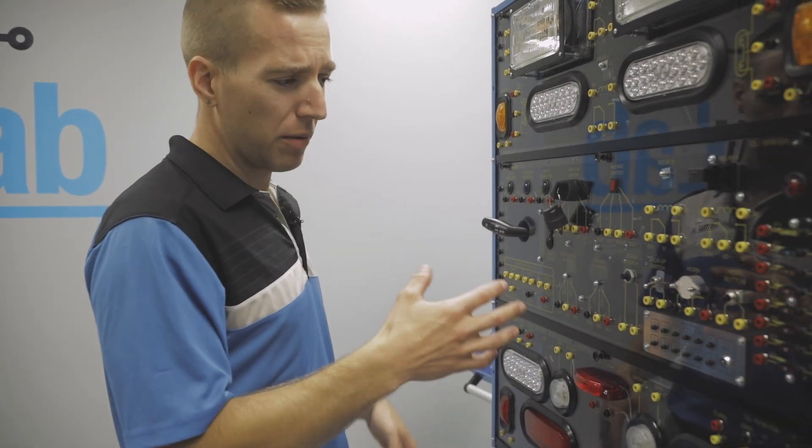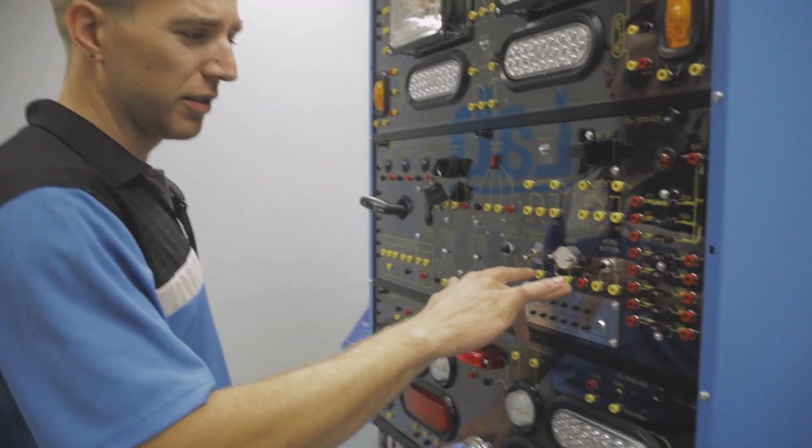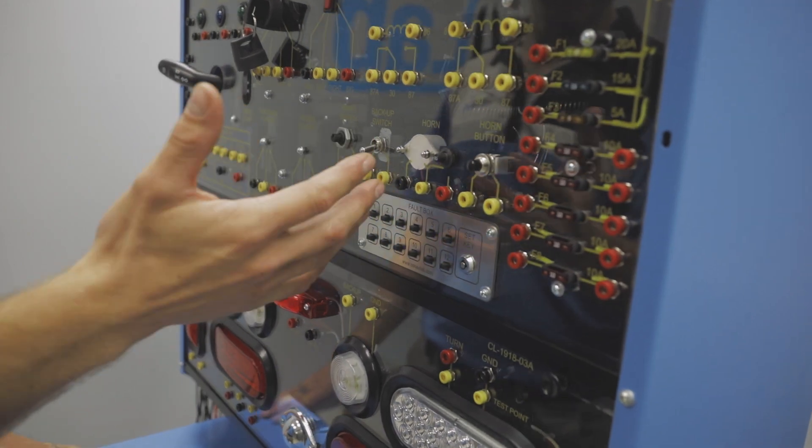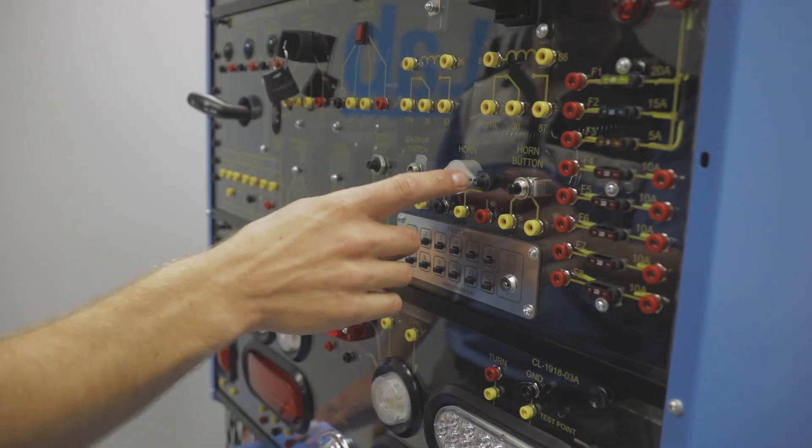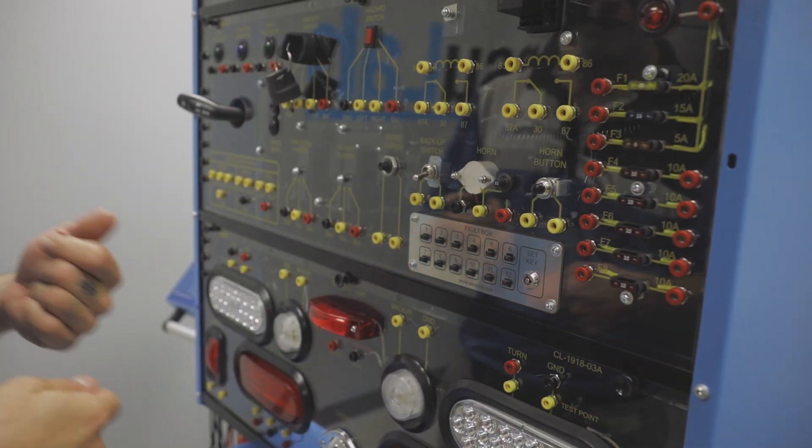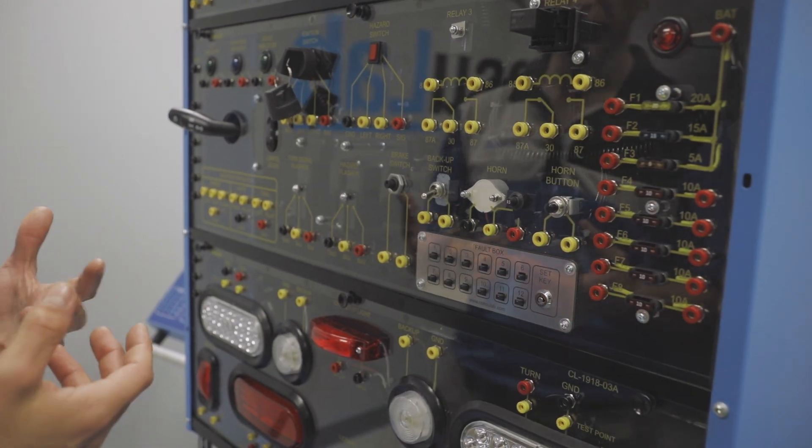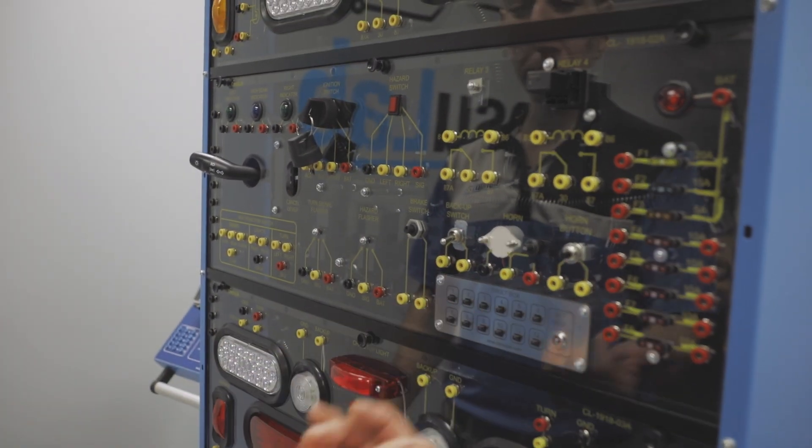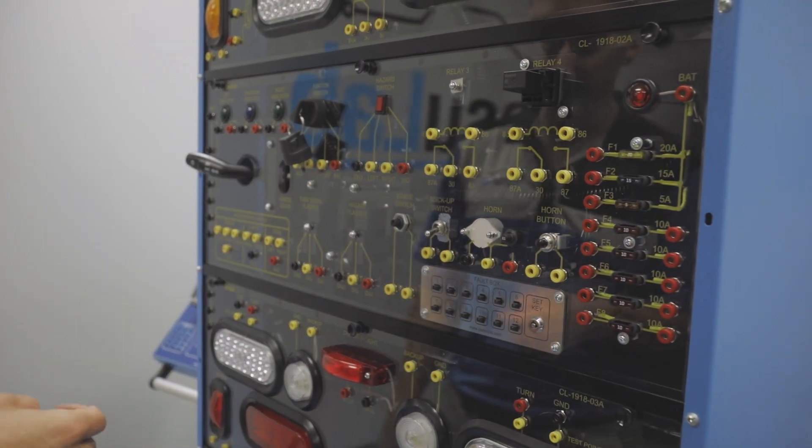When we were testing this we found that one of the components here, if we weren't careful, we could let the magic smoke out. So we put in a breaker so that even if your students make a mistake, they'll just pop the breaker and you'll be able to walk up and reset it.